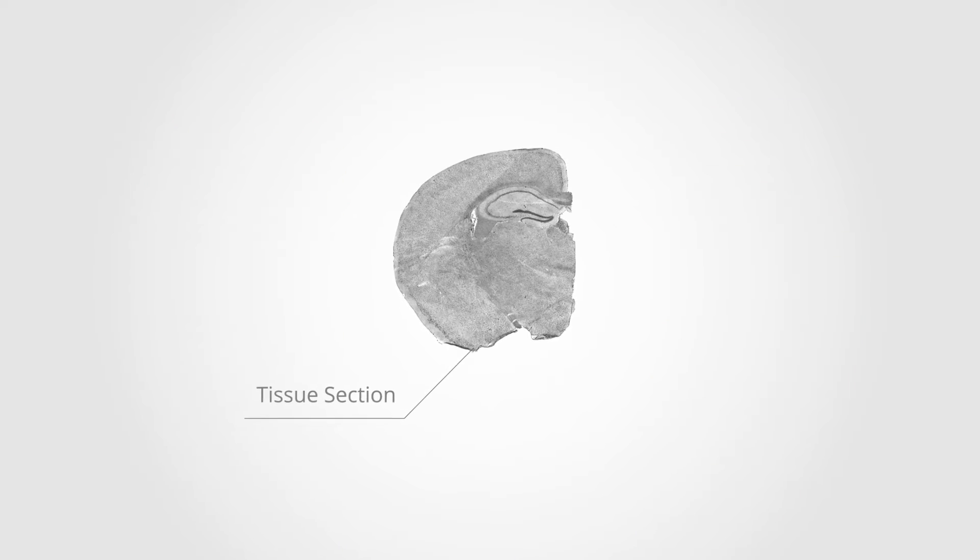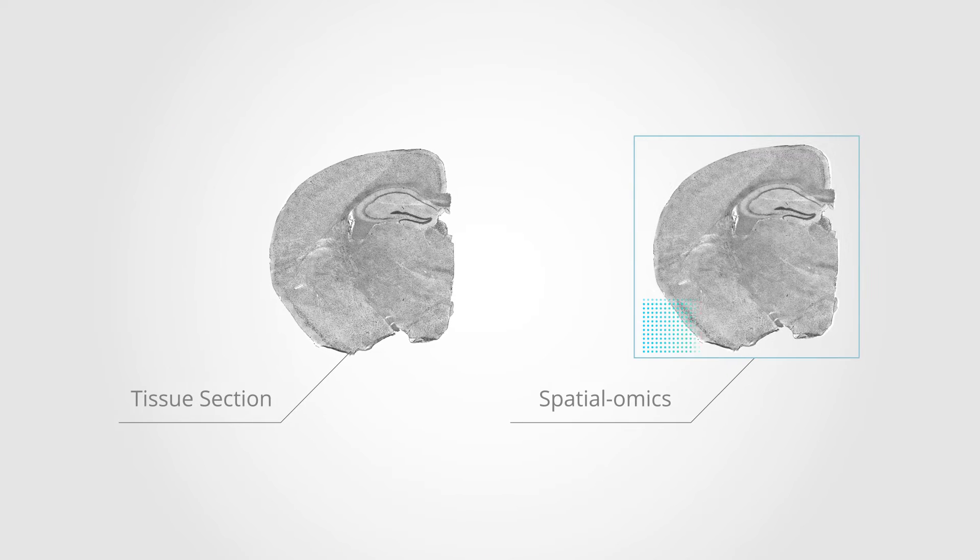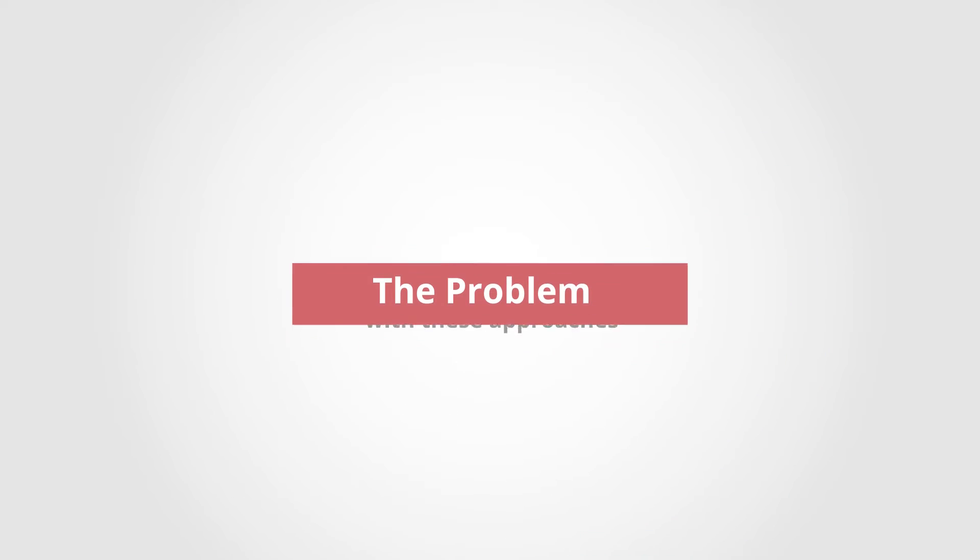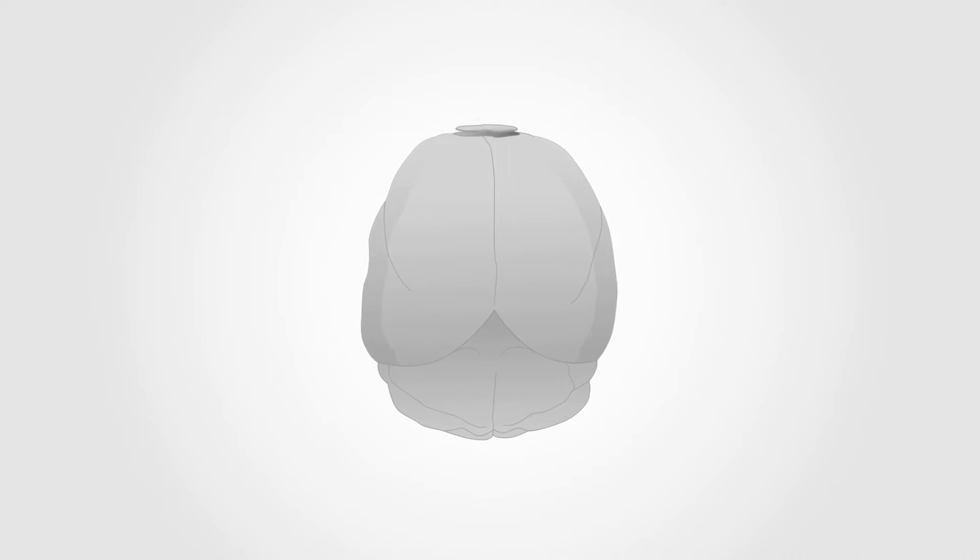Most recently, spatial omics methods combine molecular profiling and imaging of tissues. However, current spatial omics methods rely on thin, 2D tissue sections for molecular characterization.